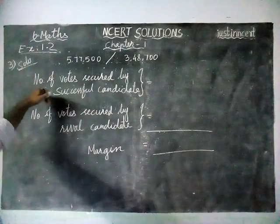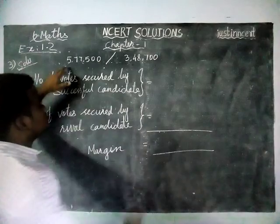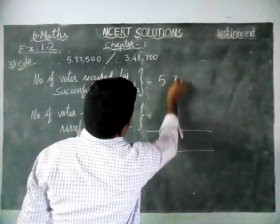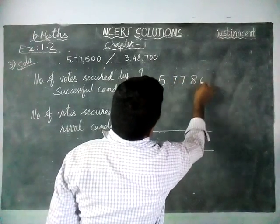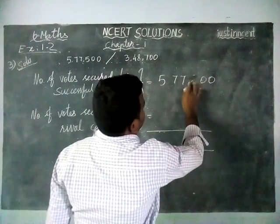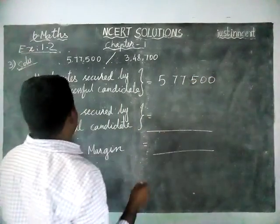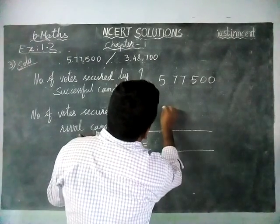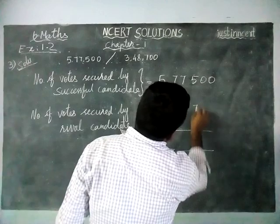So firstly, we are going to write: number of votes secured by successful candidate is 5,77,500. And next, number of votes secured by rival candidate is 3,48,700.